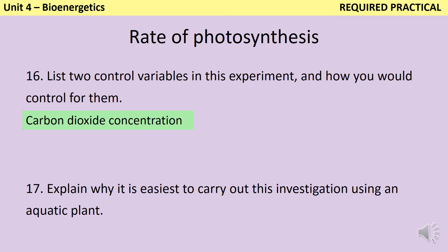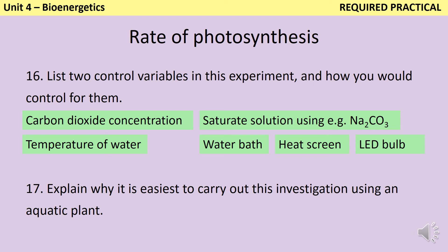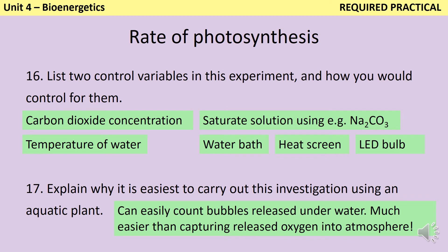To control for carbon dioxide concentration, we can add a chemical like sodium carbonate or sodium bicarbonate that will release carbon dioxide into the water and ensure it's saturated — so there's so much carbon dioxide it can't possibly be limiting. There are a number of ways to control temperature: we could put the whole experiment in a water bath, though that's challenging since water baths tend to have opaque sides. A heat screen might be easier, or you could use an LED bulb so the light bulb isn't generating heat. It's easier to carry out this investigation using an aquatic plant because when the plant is underwater you can see the gas being produced and count the bubbles, whereas it's much harder to collect oxygen released into the atmosphere.